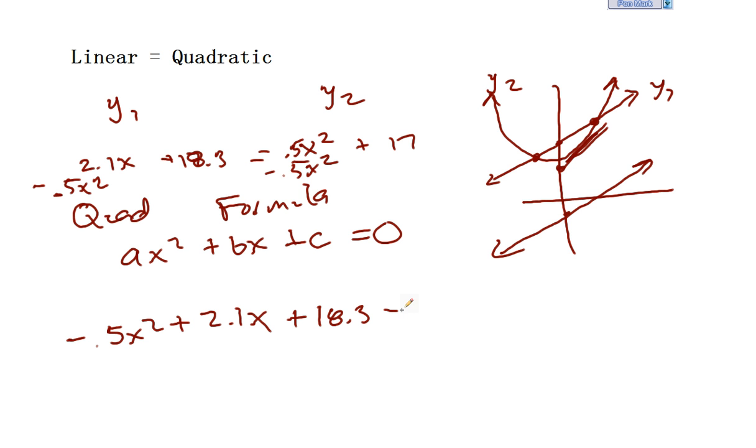Plus 18.3 equals 17. And now if I subtract 17 from both sides, I'll have negative 0.5x squared plus 2.1x plus 1.3 equals 0.